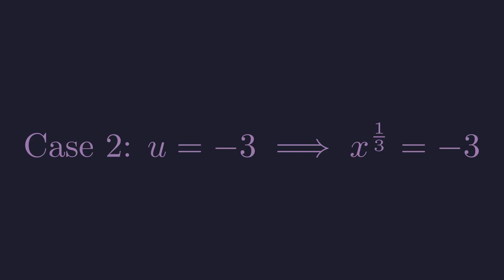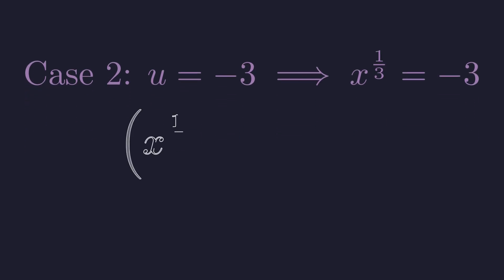For the second case, if u equals negative three, then x to the one-third equals negative three. Same process, cube both sides, giving us x equals negative 27.